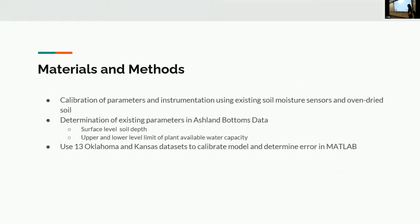The first thing we're going to start doing is calibrating these parameters and instrumentation. Currently, a lot of those green dots, the soil moisture was collected using soil moisture sensors. I'm going to go out to the field and collect some of that soil and oven dry it to see if those sensors are working. Additionally, check the precipitation events. We might have just missed the precipitation event in the base data. And then look at some of the existing parameters in the Ashland Bottoms data, including surface level soil depth and the upper and lower limit of the plant available water capacity, which hopefully will help calibrate the model better. We're using about 13 data sets from Kansas and Oklahoma to try to calibrate this model overall.